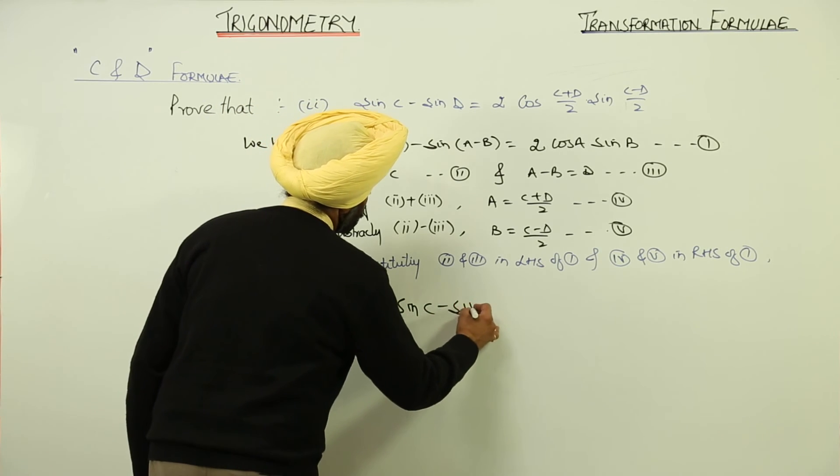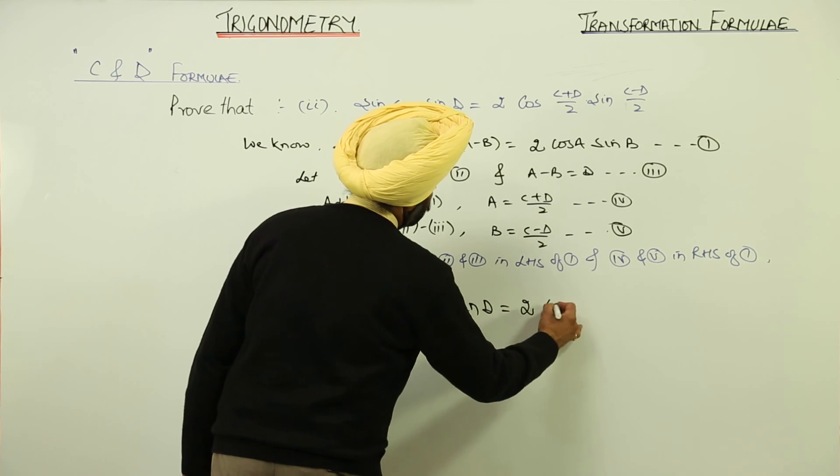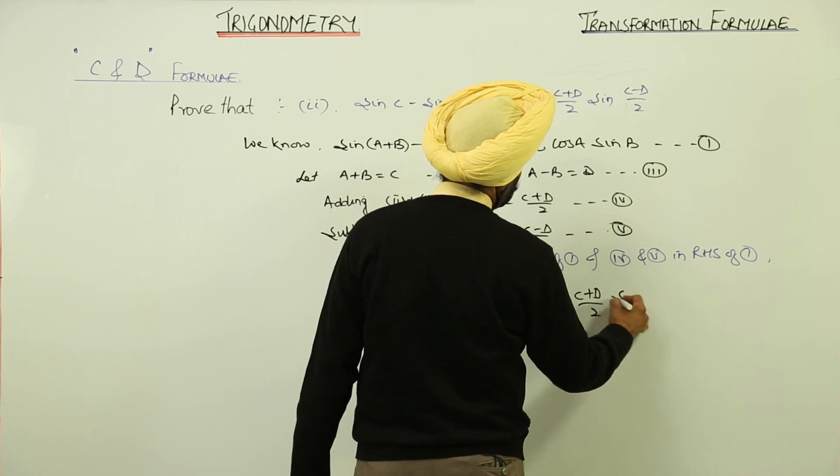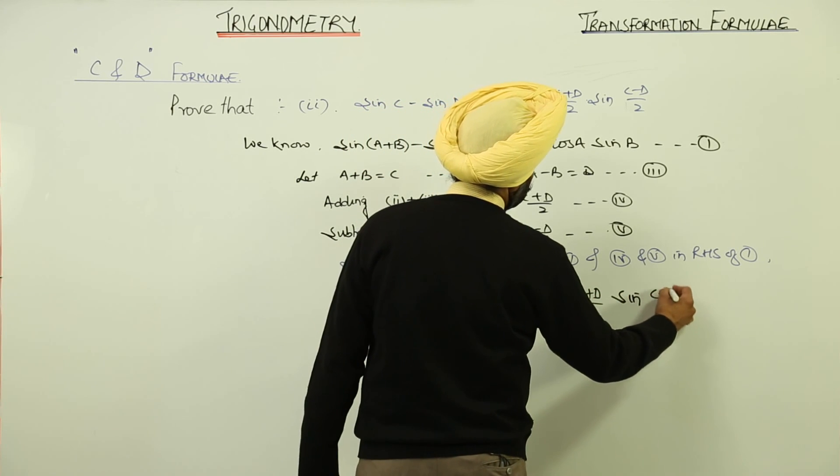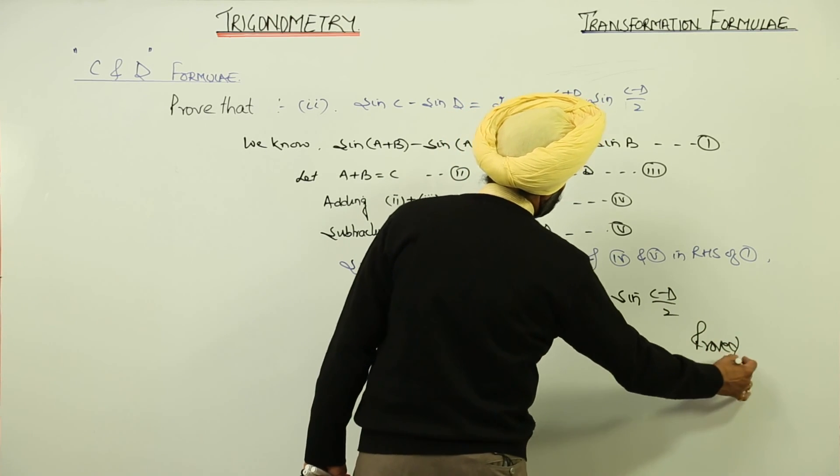sin(C) - sin(D) = 2cos((C+D)/2)sin((C-D)/2), proved.